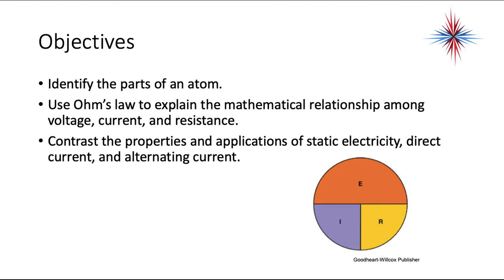The objectives of this chapter is that we can identify the parts of an atom, use Ohm's Law to explain the mathematical relationship among voltage, current, and resistance, and contrast the properties and applications of static electricity, direct current, and alternating current.